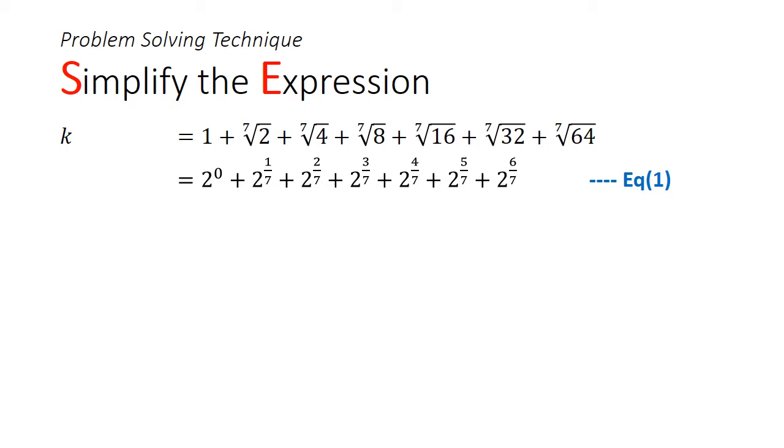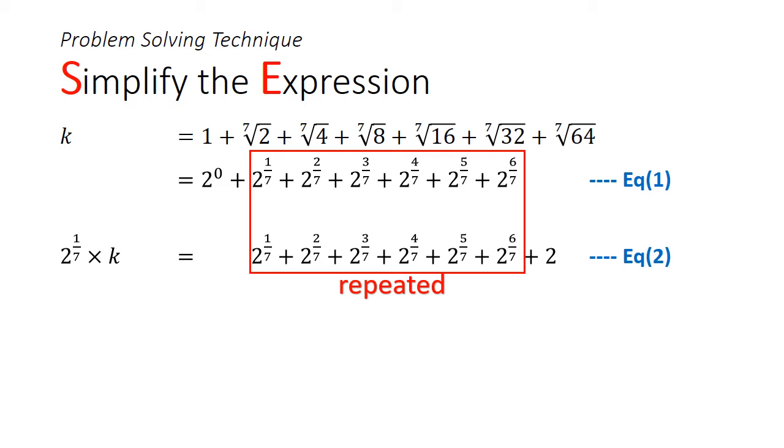This also tells us that the common ratio is 2 to the power of 1 over 7. By multiplying every term in the equation by the common ratio, we will get equation 2. Notice that every term transforms into its subsequent term. For example, 2 to the power of 0 becomes 2 to the power of 2 over 7. And most of the terms will be repeated. When you subtract equation 1 from equation 2, the repeated terms will cancel out.